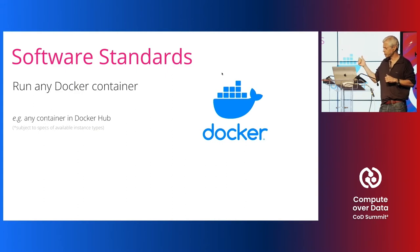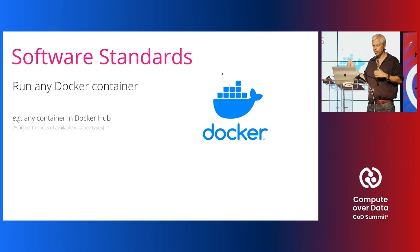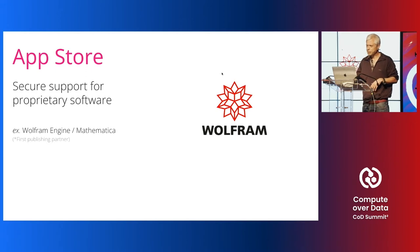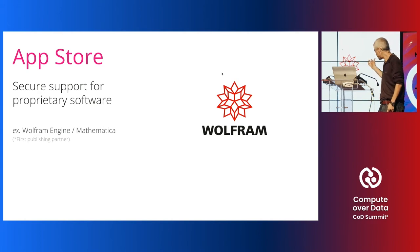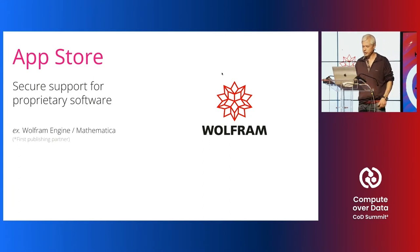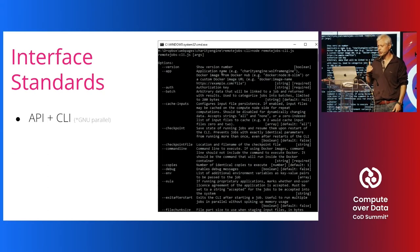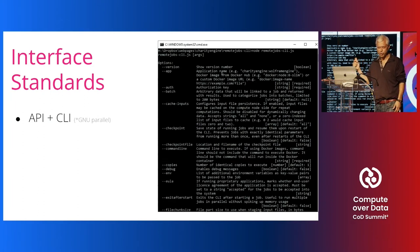Your container can come from Docker Hub, be on IPFS, or just be a container a customer has developed themselves. We have an app store with methods to secure proprietary software and make it available on a pay-per-hour basis. Our first publishing partner is Wolfram Research, so you can use Wolfram Engine and Mathematica on a pay-per-hour basis — you pay for your runtime and a premium for the software. Using the system is made easier by a number of standard interfaces, including an API for programmatic interaction.